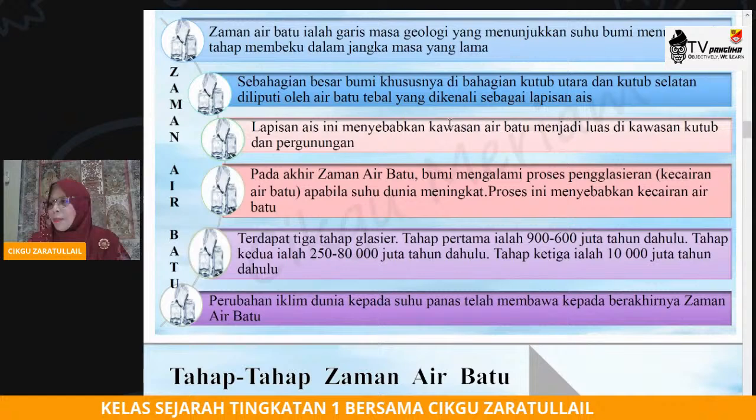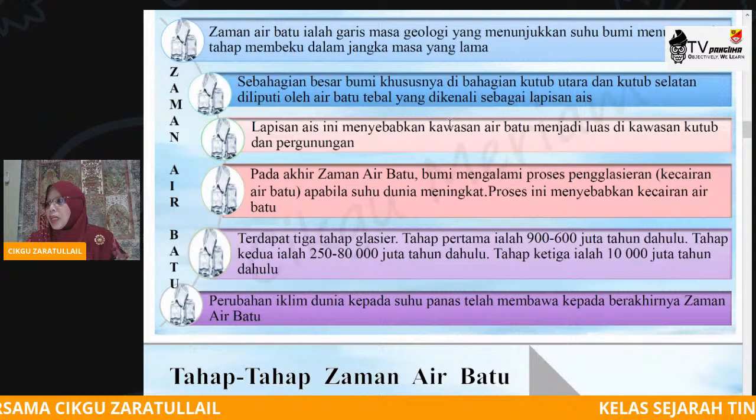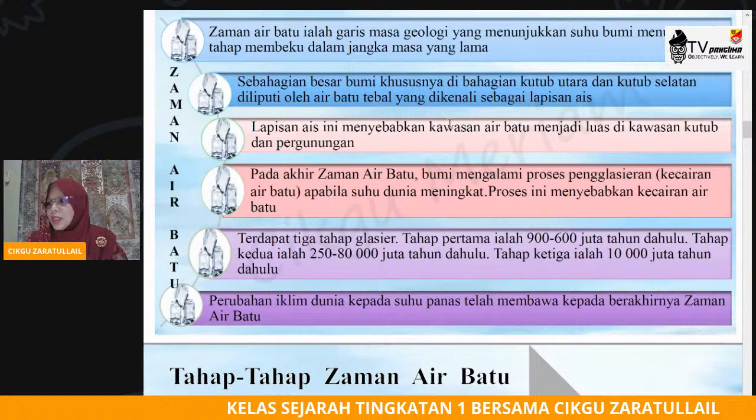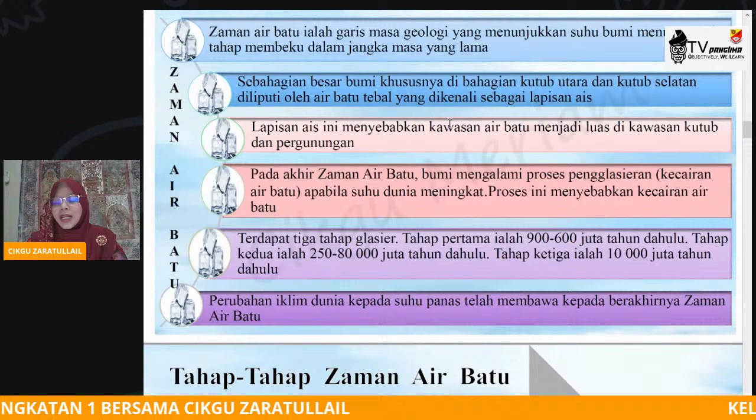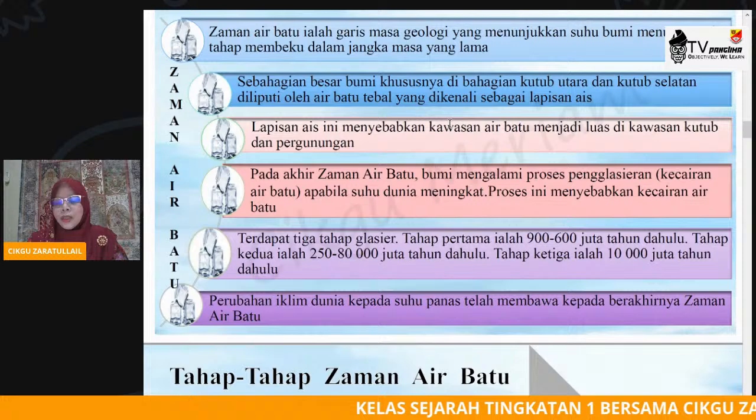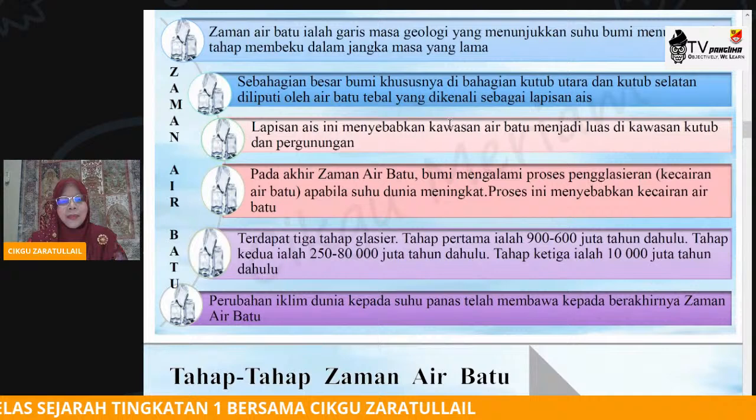Zaman Air Batu ialah garis masa pembentukan bumi yang menunjukkan terdapatnya perubahan dari segi suhu yang menurun kepada tahap membeku. Sebahagian besar daripada bumi terutamanya di bahagian kutub utara dan juga kutub selatan dilitupi oleh ais yang tebal. Ini pada suatu masa dahulu, berjuta-juta tahun dahulu, bumi kita dilitupi oleh lapisan ais yang cukup tebal.